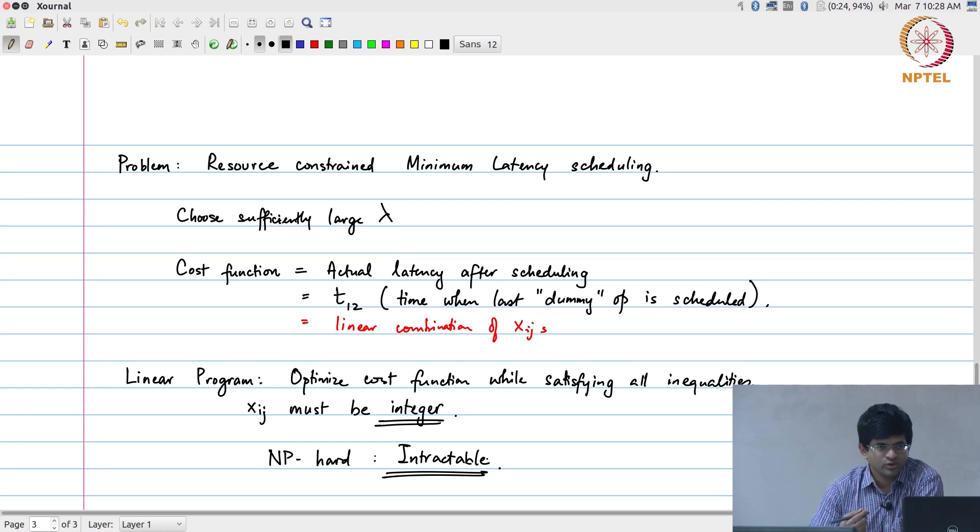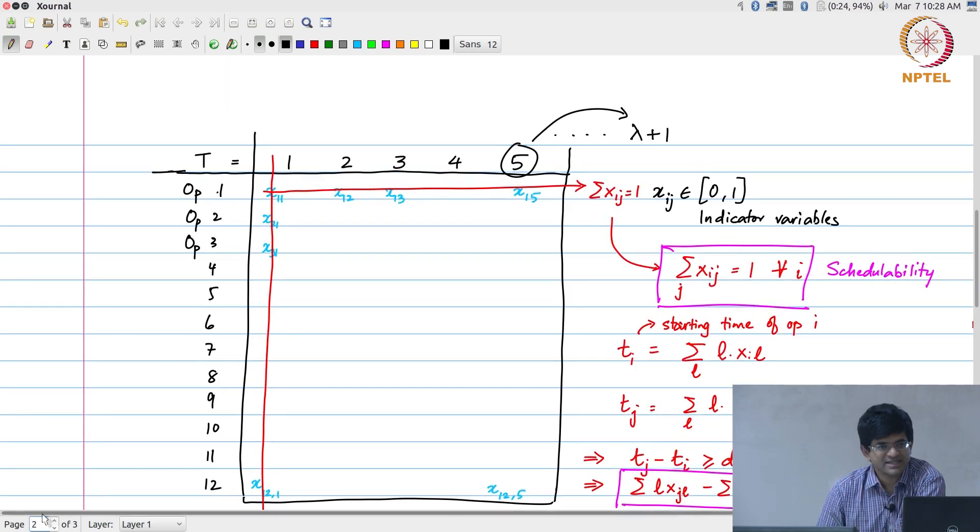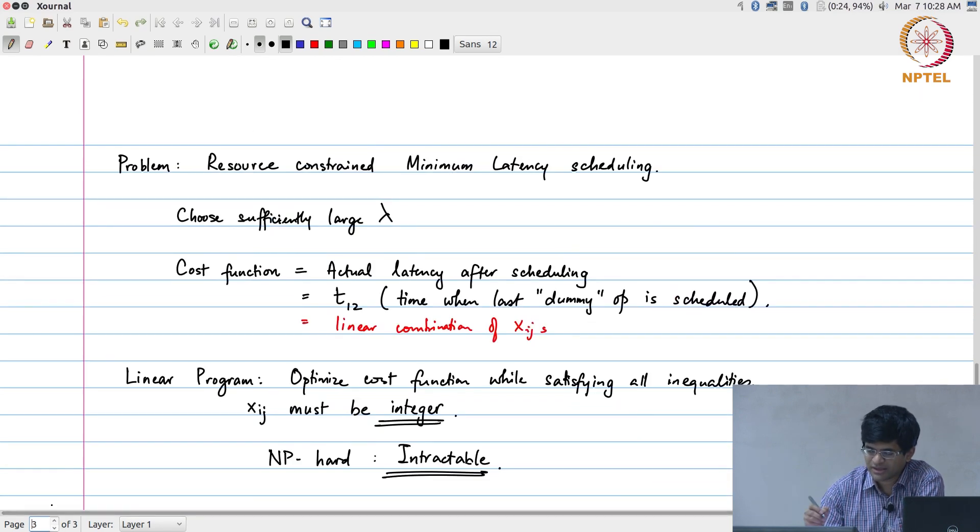Then why did we go through this? Why did we basically go about this entire scheduling problem and try to cast it as an integer linear program? Simple reason: it is basically to show that this is a very general framework. I can take on pretty much any kind of set of operations, number of time steps, dependencies, etcetera, and frame an appropriate set of constraints that need to be solved. What I have talked about over here is the so-called resource constraint minimum latency scheduling problem.